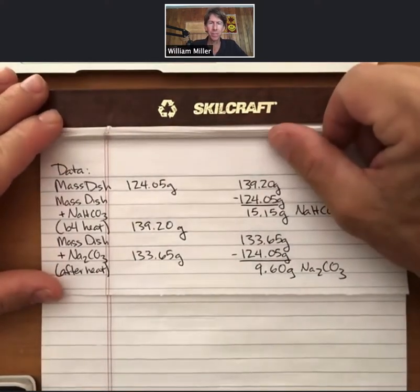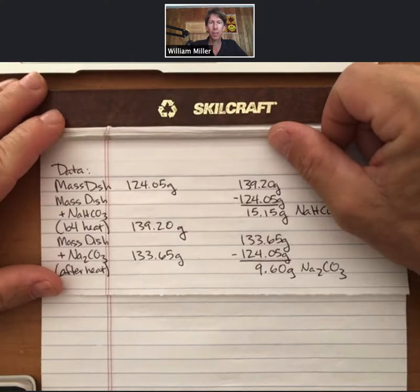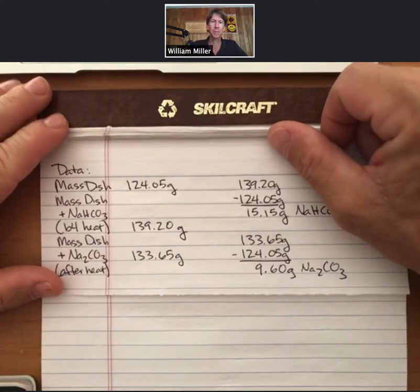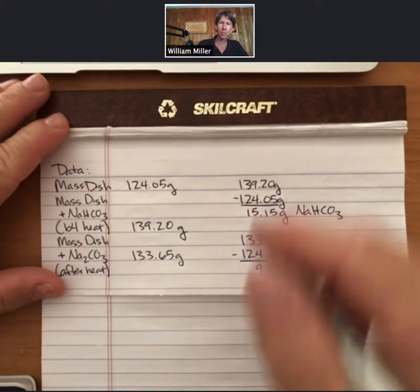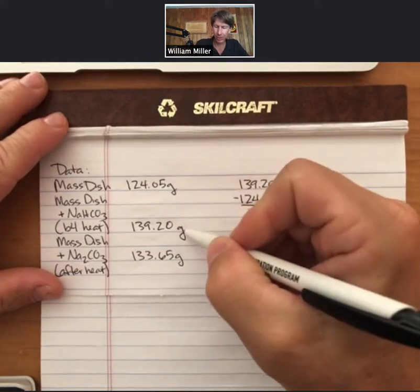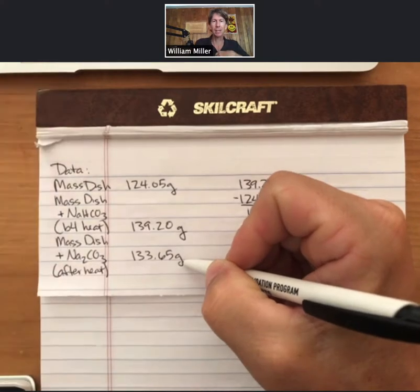Propagation of errors deals with, at least the way we're going to be using it, instrumental errors. I've done some preliminary work to show that each time you use the scale, at least the one that I have purchased,